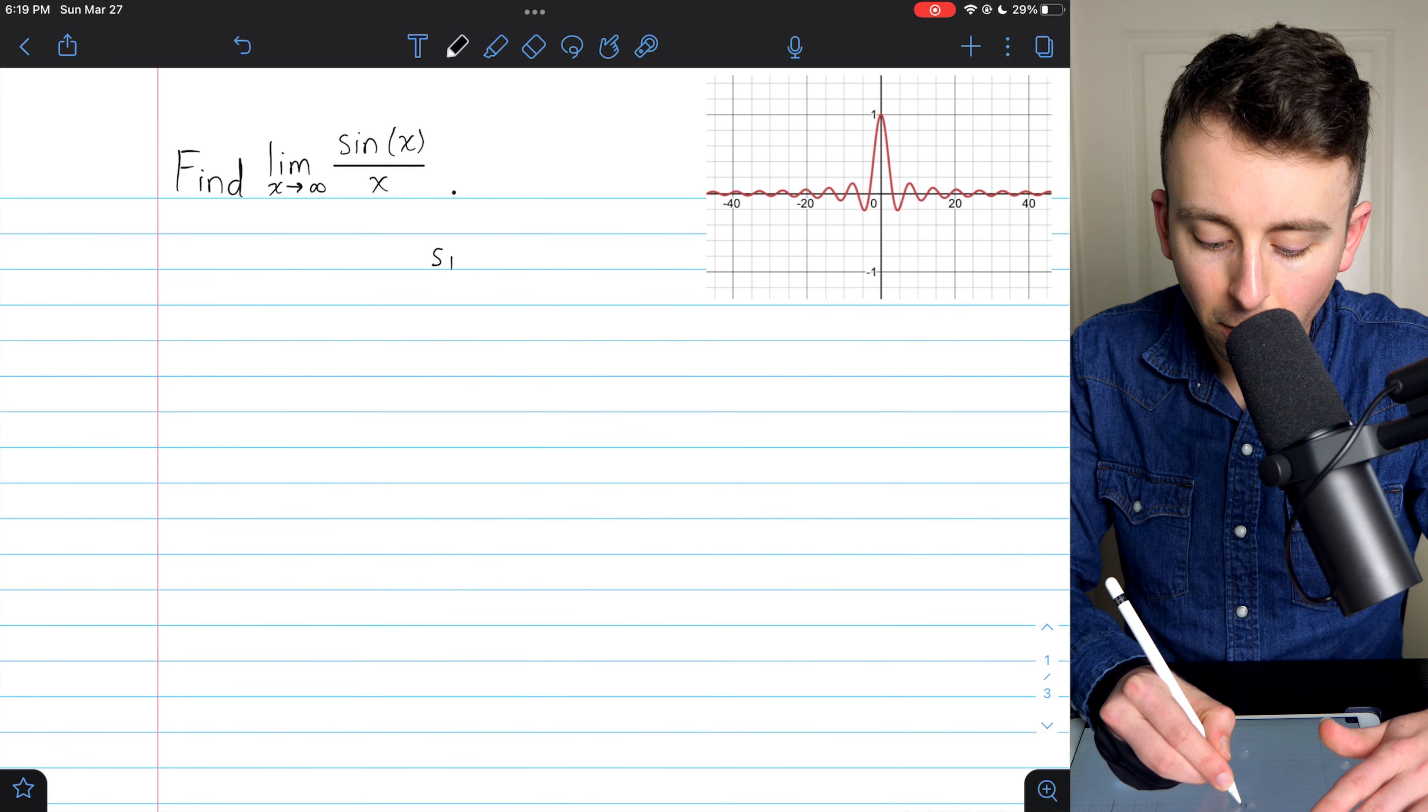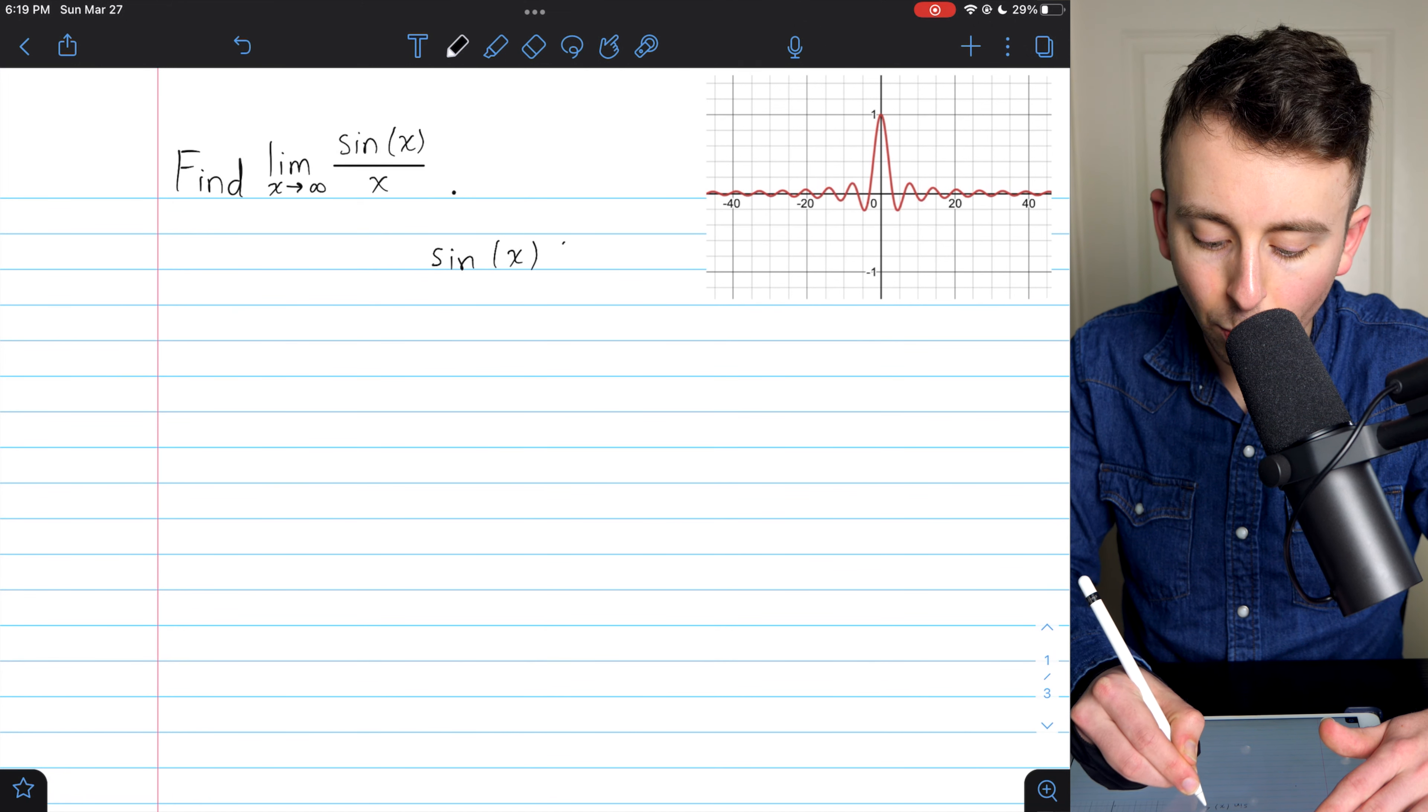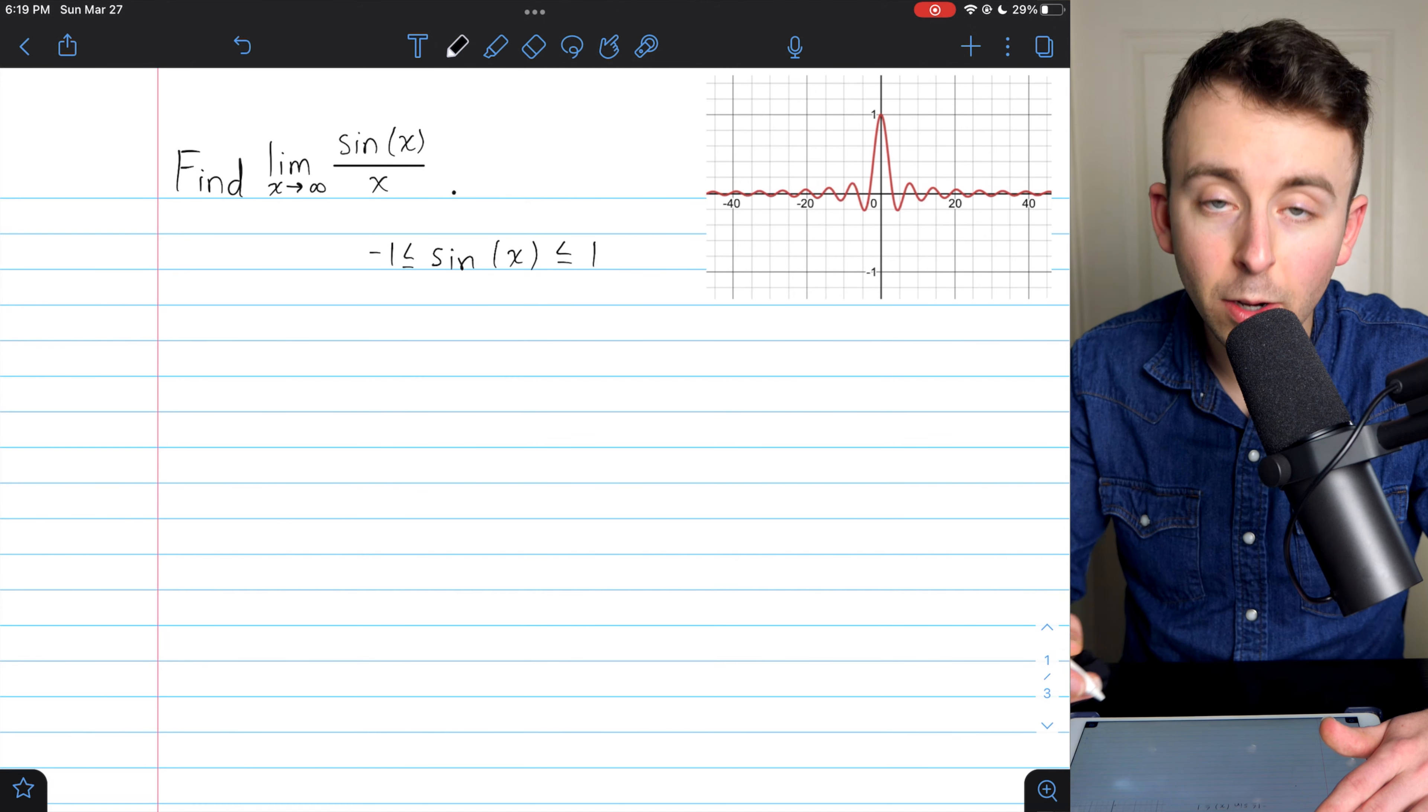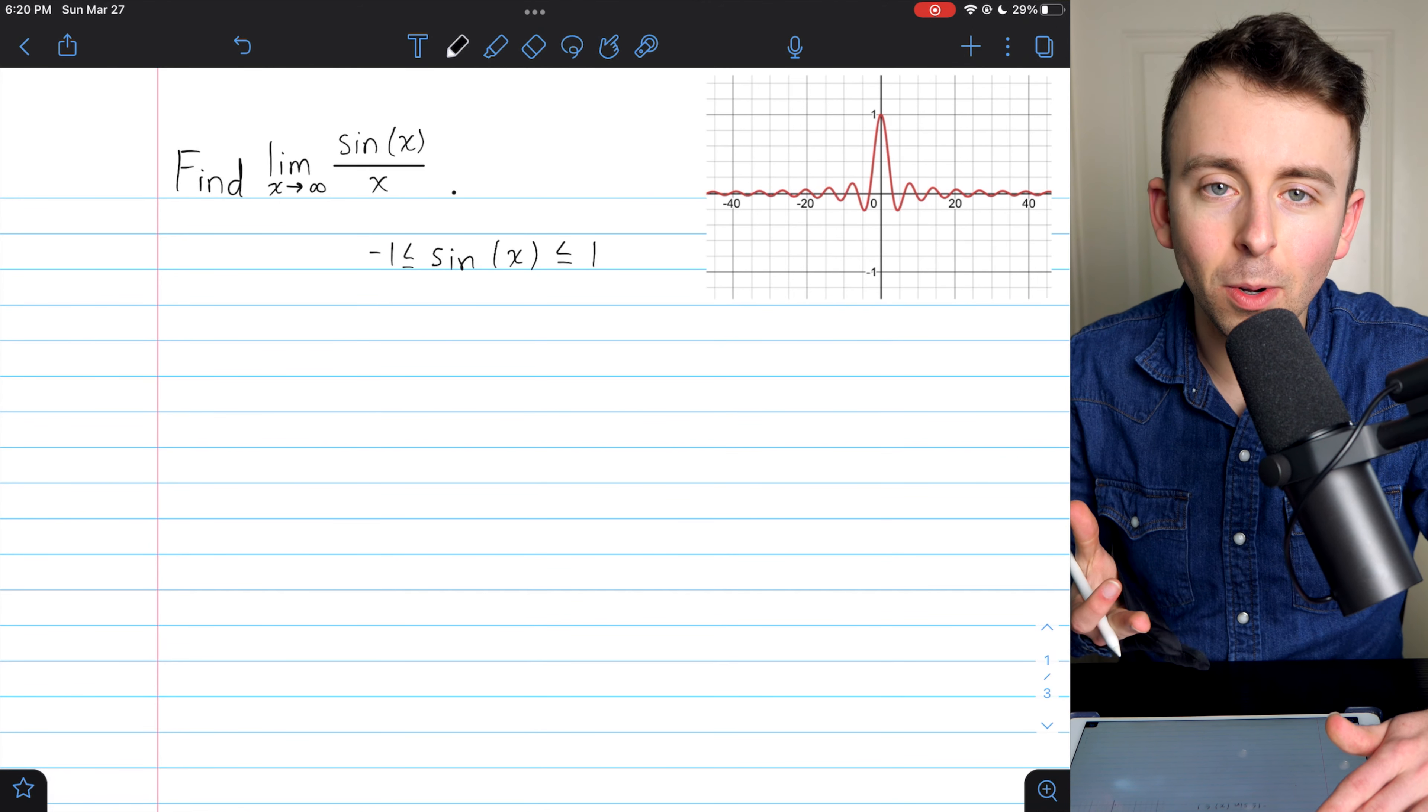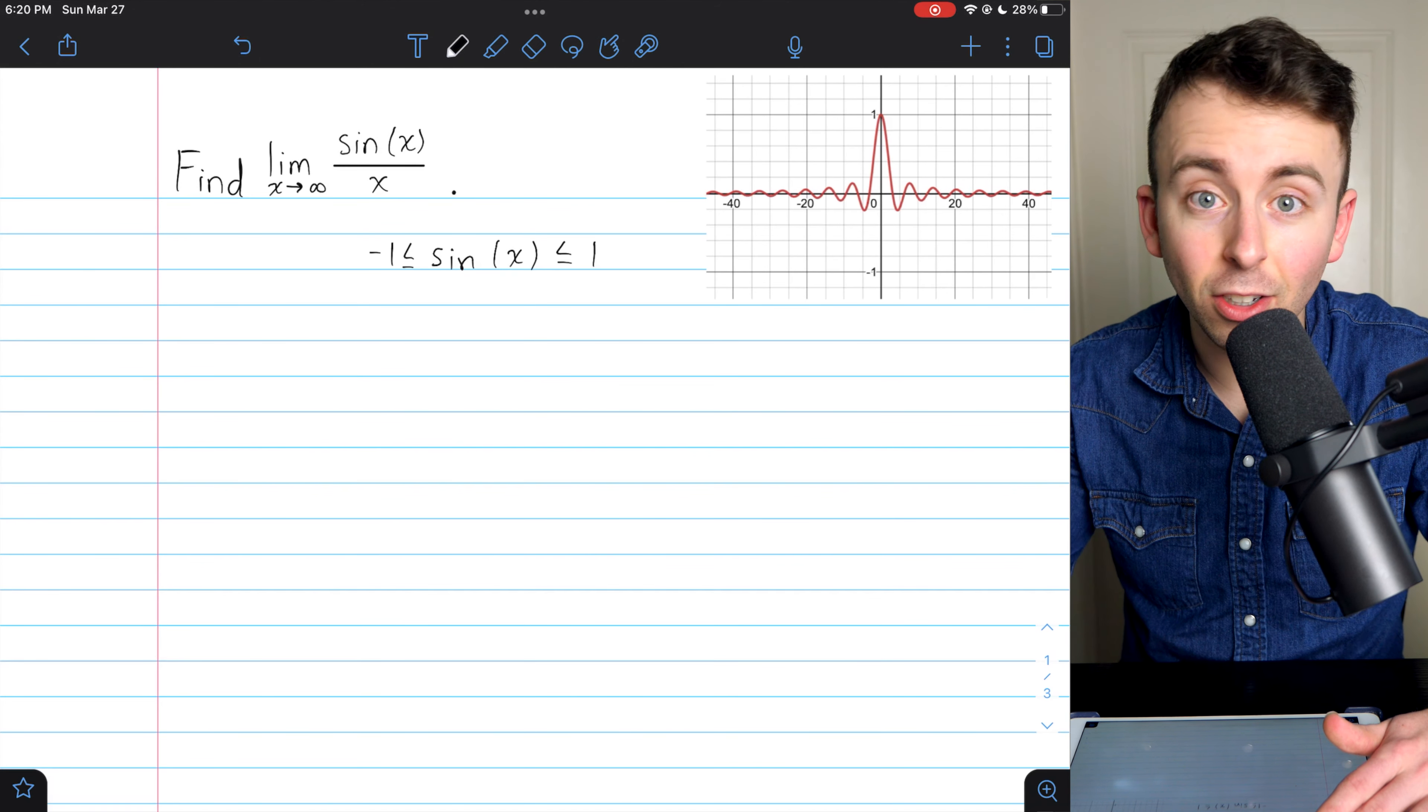Since the squeeze theorem is based on inequalities, we should start off with the inequality that we know. Sine of x is less than or equal to 1 and greater than or equal to negative 1. Again, it's squeezed between these numbers, which is why the squeeze theorem is often useful with sine and cosine limits.